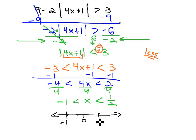At negative 1 and positive 1 half, we need open circles because we're not equal to those values.